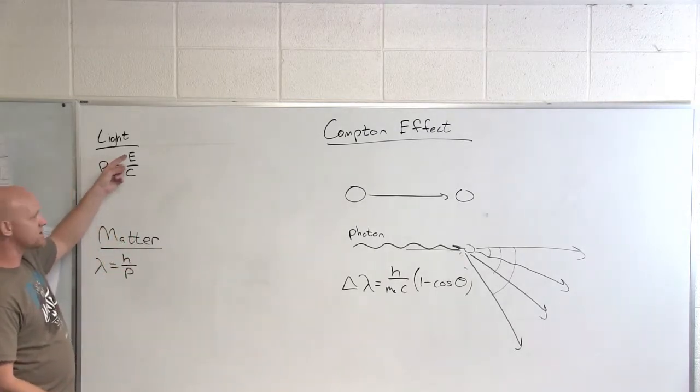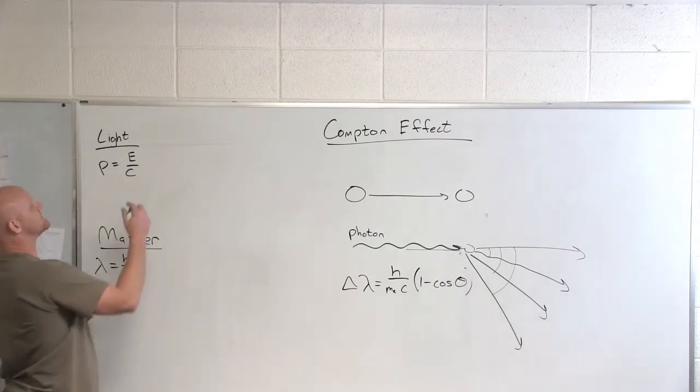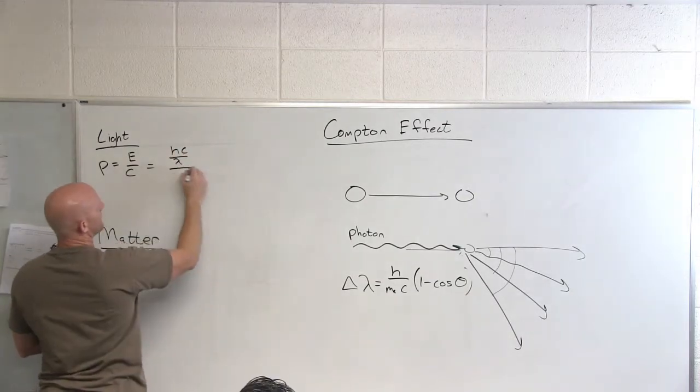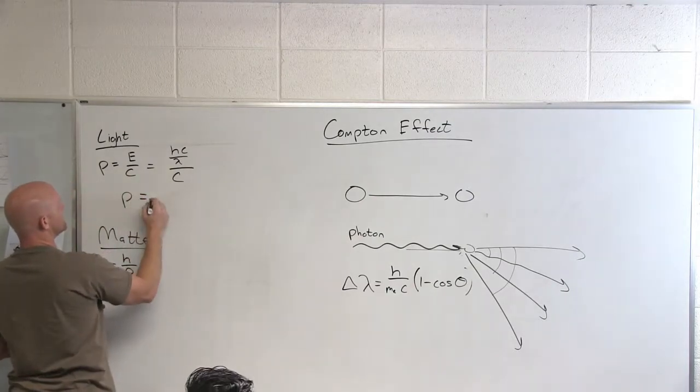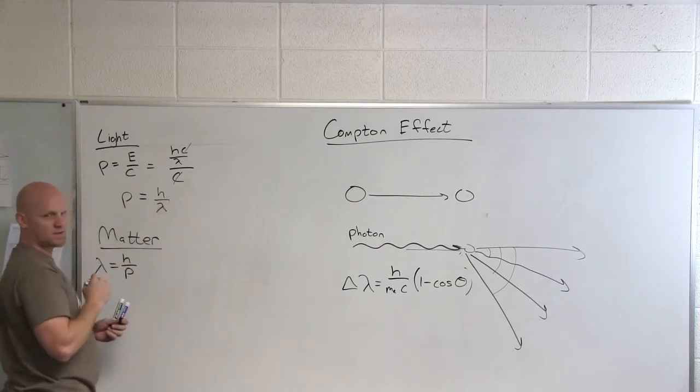That momentum is equal to the energy of the light divided by the speed of light. So we could write the momentum of light as hc over lambda, all divided by c, and we find that the momentum of light could be written as, the c's will cancel, h over lambda.